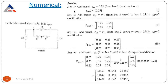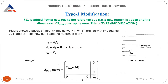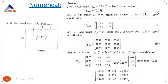Step 1: Add branch Z1R — new bus 1 is added to reference bus R. This is type 1 modification. Since Z bus old is zero (no existing matrix), Z bus new = [ZB] = [0.25]. Step 2: Add branch Z21 = 0.1 from new bus 2 to old bus 1. This is type 2 modification. Z bus new = [[0.25, 0.25], [0.25, 0.25 + 0.1]] = [[0.25, 0.25], [0.25, 0.35]].